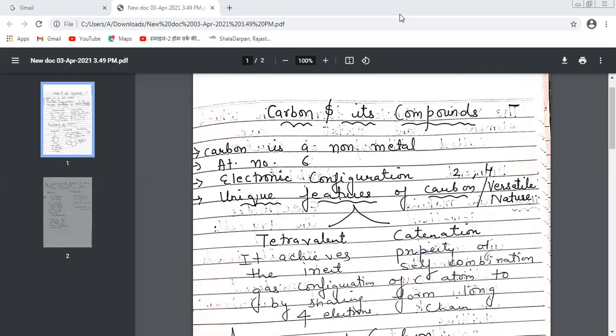Carbon is tetravalent in nature because it has four electrons in its outermost shell. It achieves the inert gas configuration by sharing four electrons.